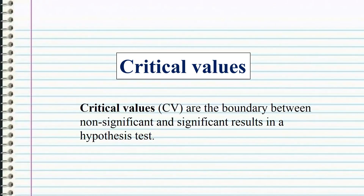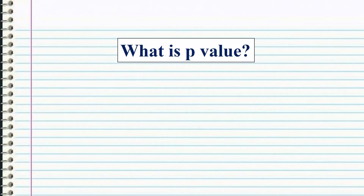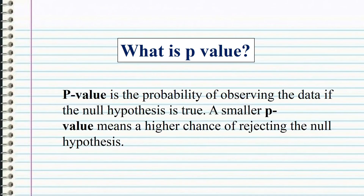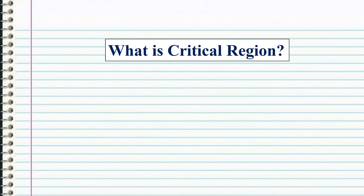Critical value (Cv) is the boundary between non-significant and significant results in a hypothesis test. The p-value is the probability of observing the data if the null hypothesis is true. A smaller p-value means a higher chance of rejecting the null hypothesis.